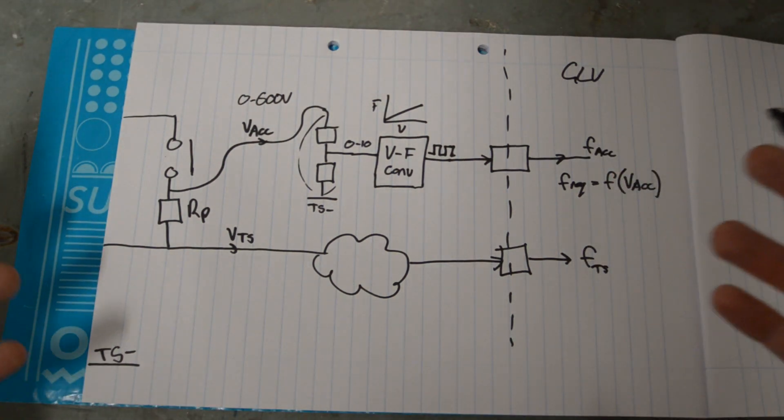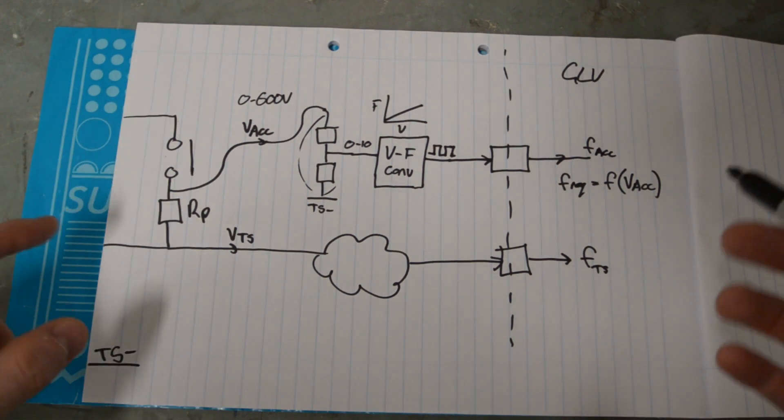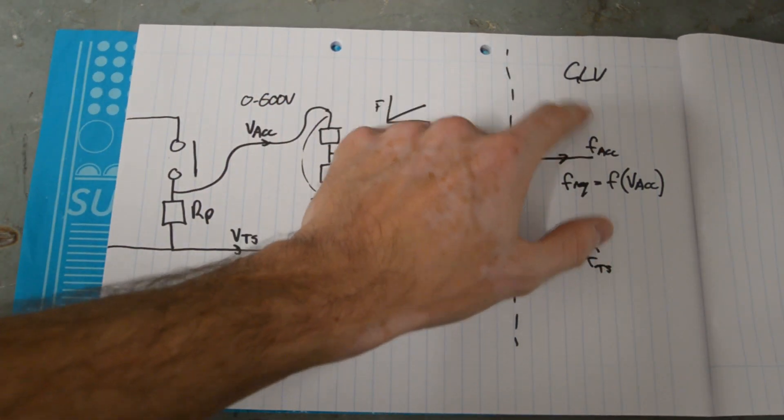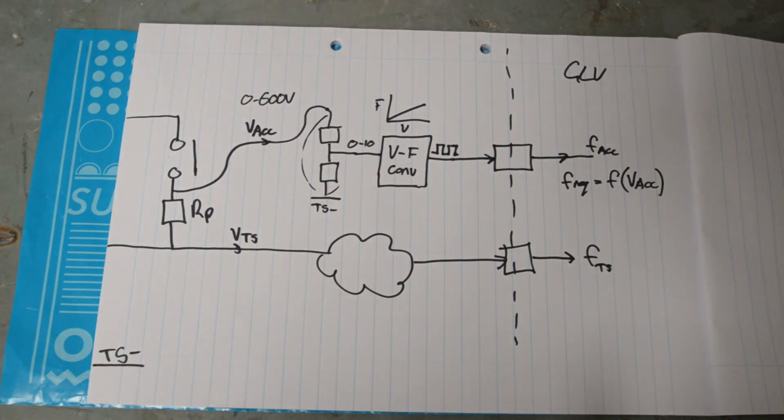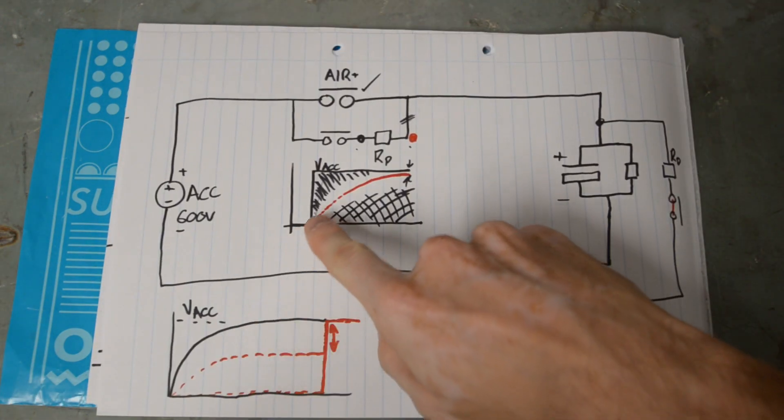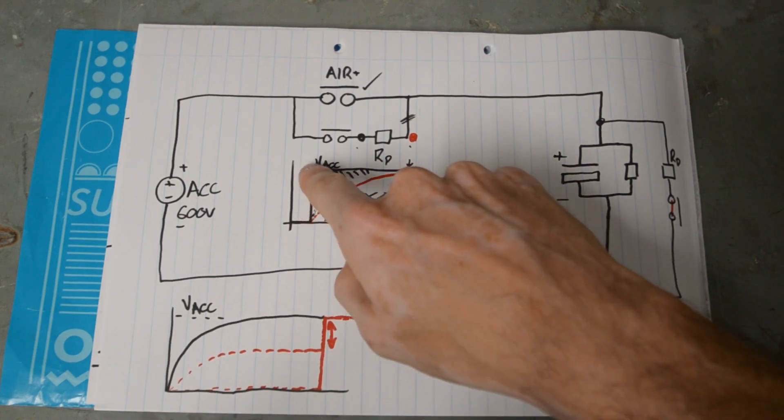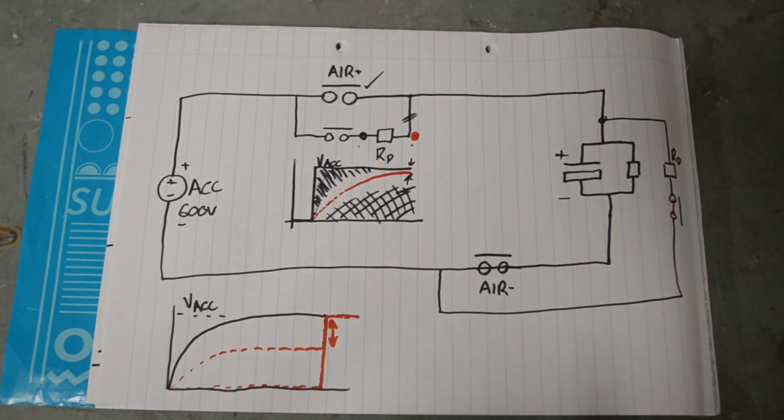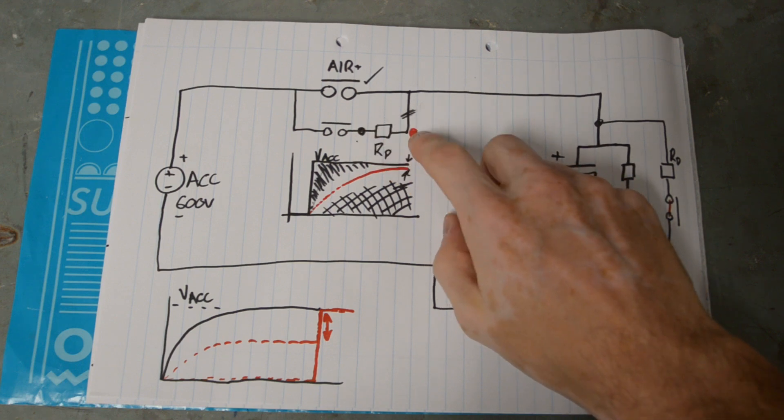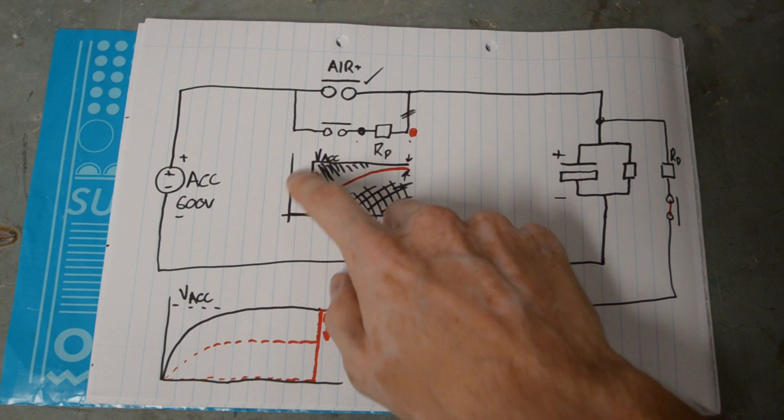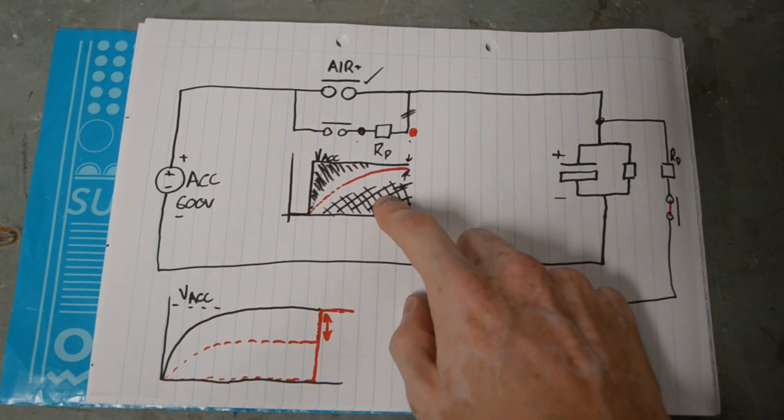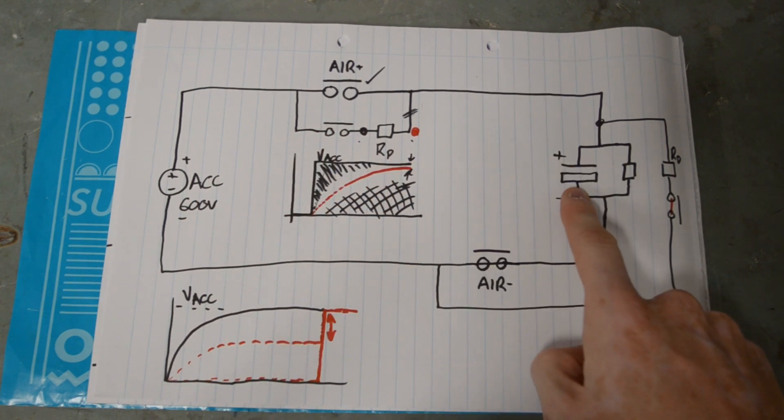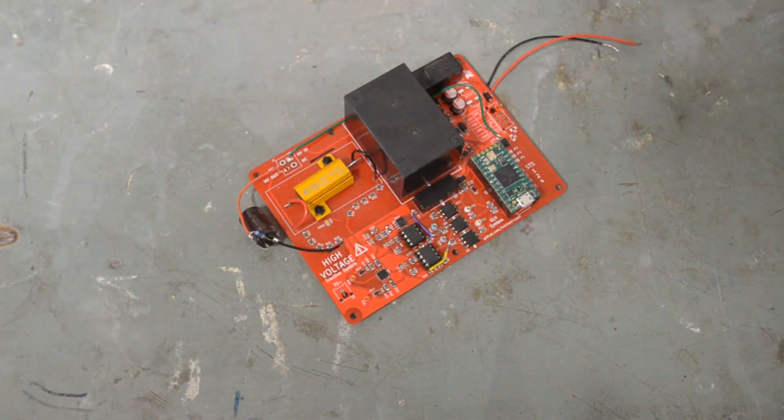So in a nutshell, that is basically the analog side of taking these two really important voltages and getting them onto the GLV system so that our microcontroller can look at them and implement this kind of logic, this kind of comparison between the accumulator voltage and the tractive system voltage to make sure that the precharge is not only complete, because this voltage is now equal to this, but also plausible. If it happens too fast, that's implausible. And if it happens too slow, that's also implausible. And those are functions of the accumulator voltage, the precharge resistance, and the tractive system capacitance.